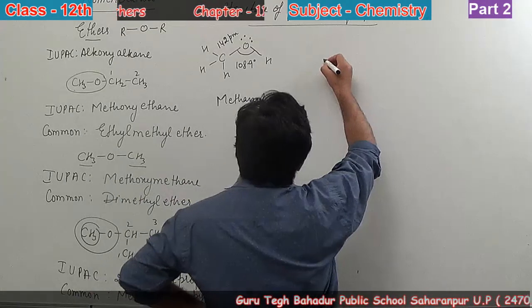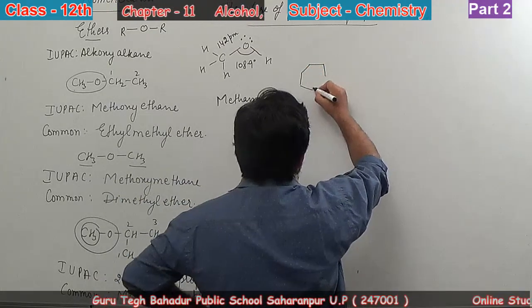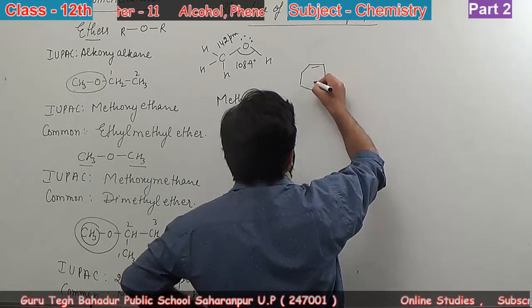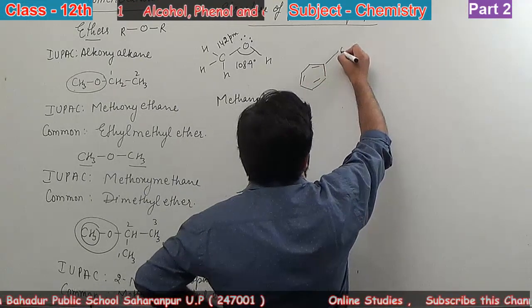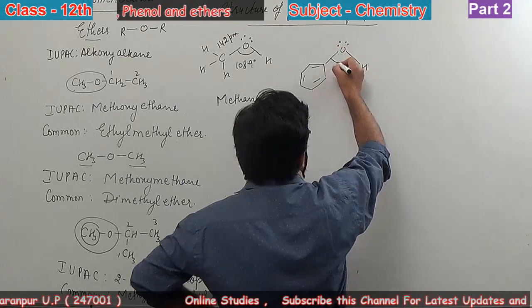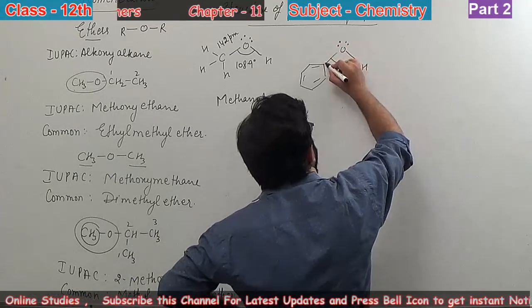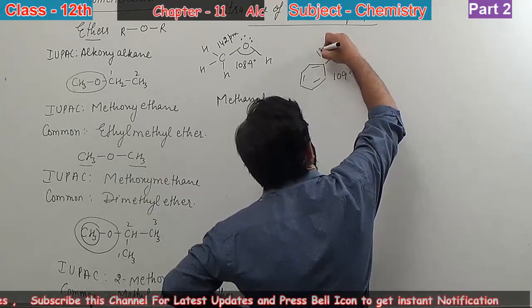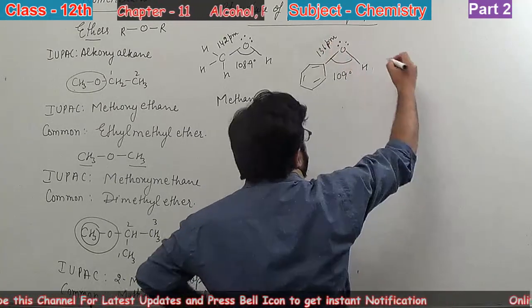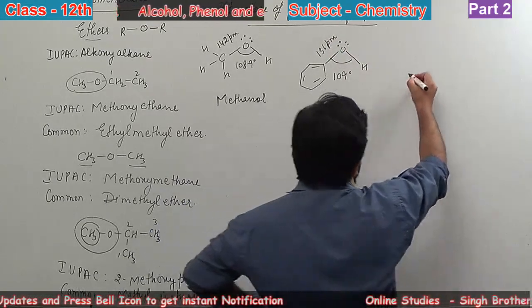Next one is phenol. [Drawing benzene-OH] Here the angle is 109 degrees, and the bond length is 136 picometer.